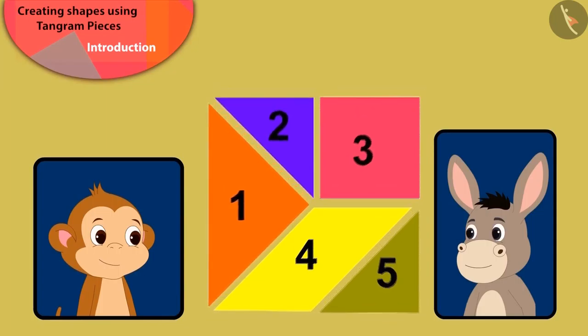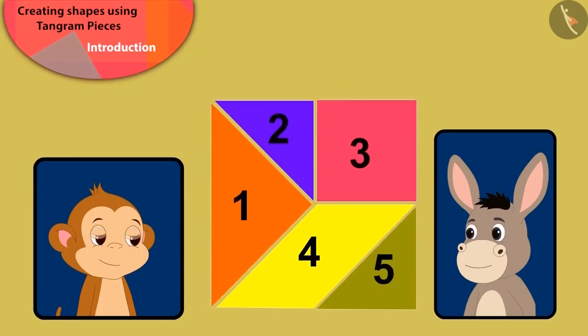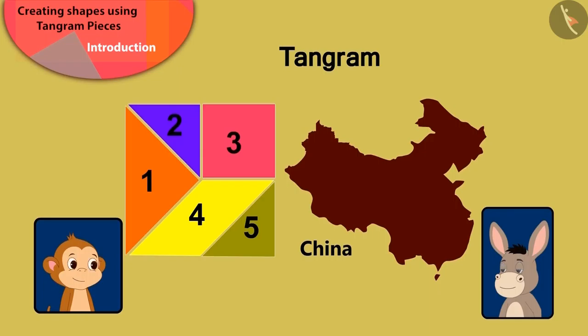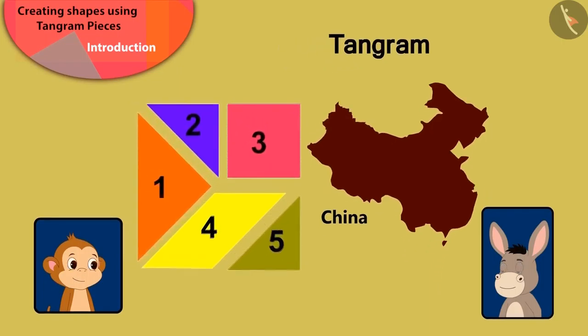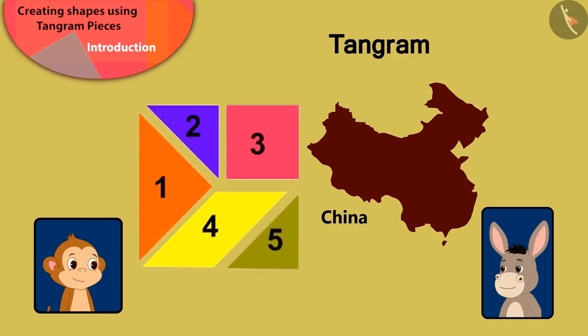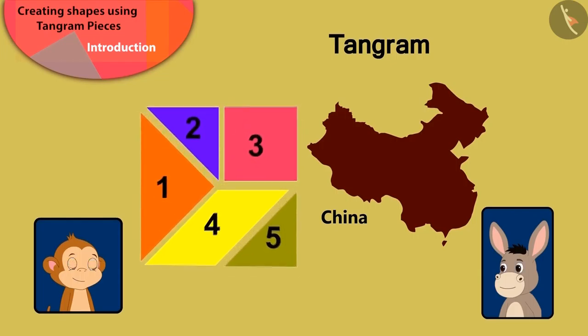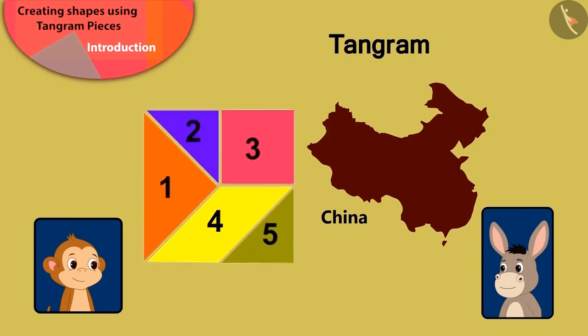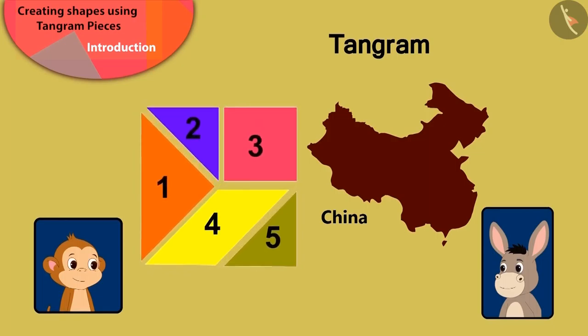Bholla asked him about the pieces of paper. Babban is telling Bholla that the five pieces of paper make a square in this way. We know this by the name of Tangram. Tangram is a unique puzzle made in China, which is made of different shapes like this.